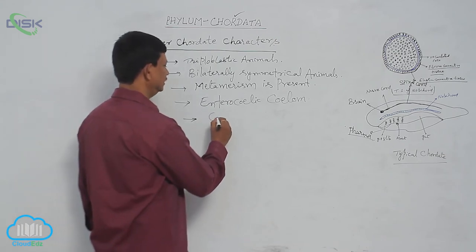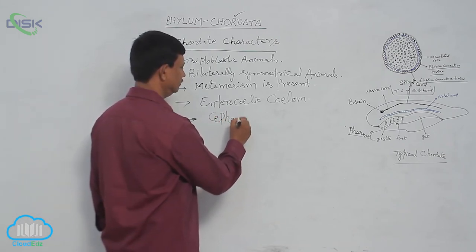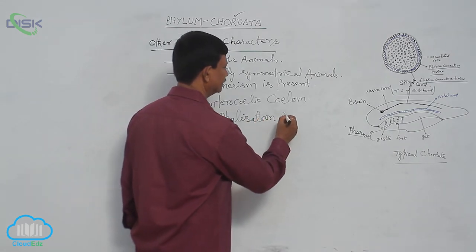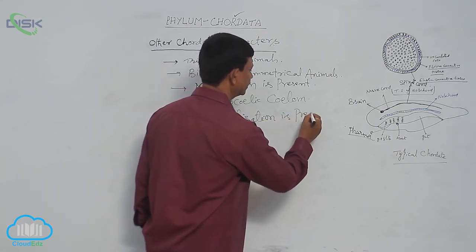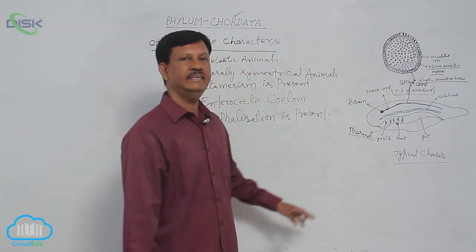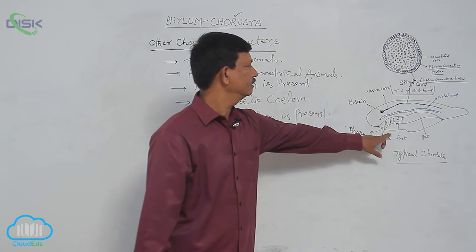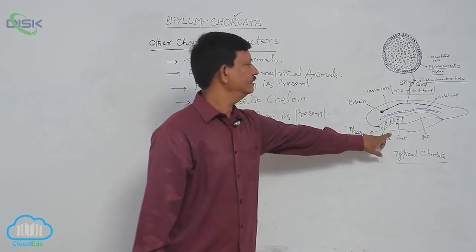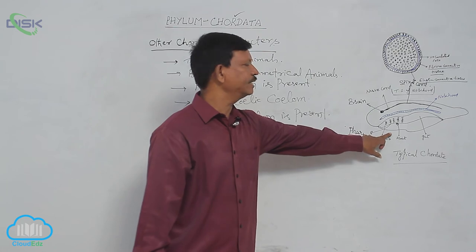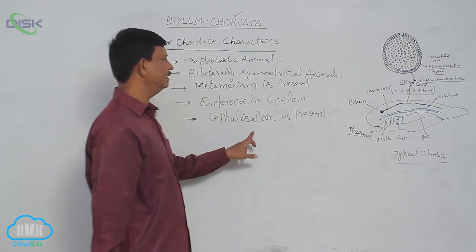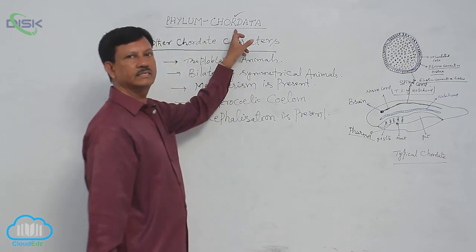Cephalization is also present. What does cephalization mean? At the anterior end of the body, there is a distinct head where important sense organs are accumulated in the head region. That is why there is a definite head present in chordates.